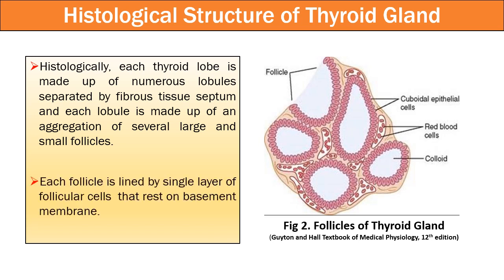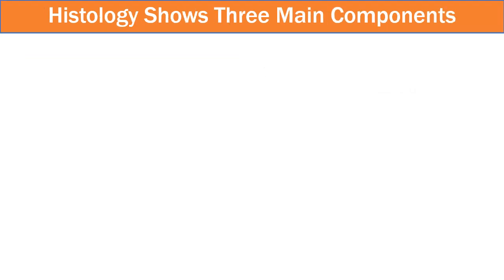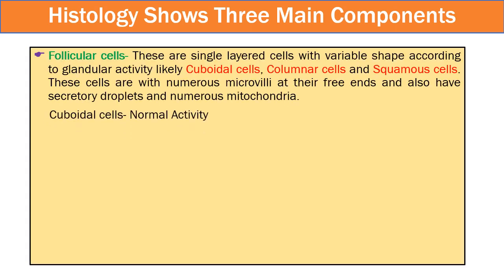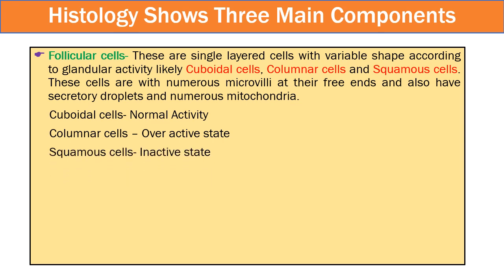Each follicle is lined by a single layer of follicular cells resting on the basement membrane. Follicular cells may be cuboidal, columnar, or squamous in shape depending upon their activity. If the follicular cells are cuboidal, they signify normal activity. If the follicular cells are columnar, they signify hyperactivity, and squamous signifies the inactive state of the cell.